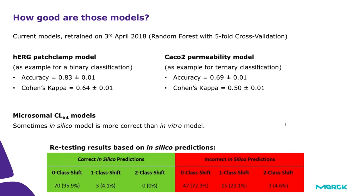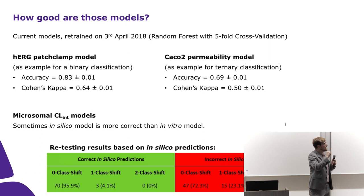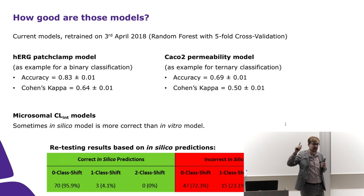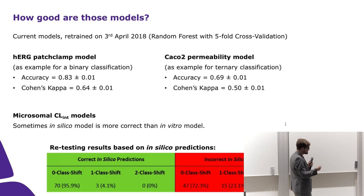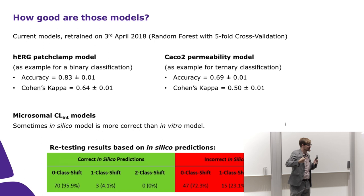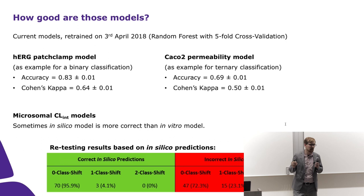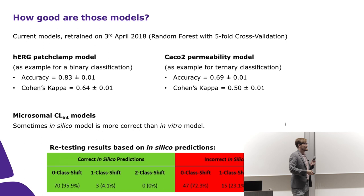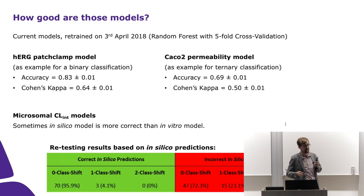We did something very interesting with the Clint assay: we looked at the predictions with the highest confidence — both correctly and incorrectly predicted — and we asked the experimentalists to repeat those experiments. With the incorrect predictions, we identified many which were actually correct, because the experiments had variability. We were able to identify data in our dataset that was not very accurate. In rare cases, in silico computational models are better than the lab assays.